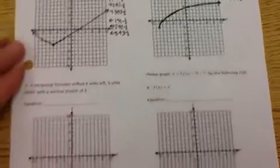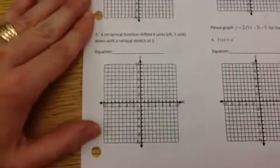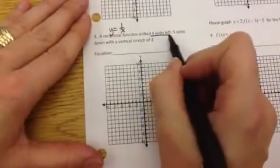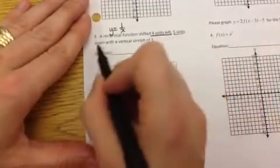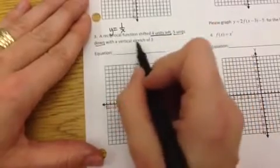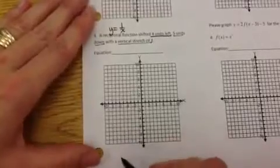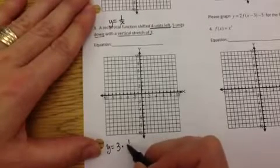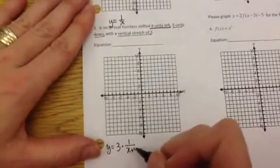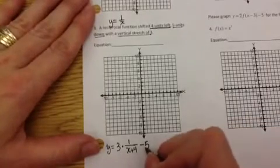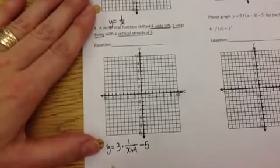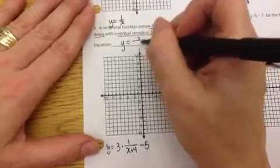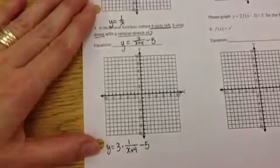Let's go to the reciprocal function — this is probably the most challenging one to draw with transformations. The reciprocal function is y equals 1 over x. To shift left, that goes inside. To shift down, that goes added or subtracted after the function. A stretch of 3 is multiplied out in front. So I get y equals 3 times 1 over (x plus 4), minus 5, which you can also write as y equals 3 over (x plus 4) minus 5.